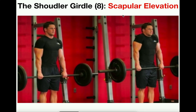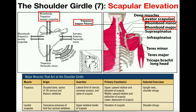Scapular elevation is one of those scapular movements that can be done independently of a shoulder joint movement — you don't actually have to move the humerus to move the scapula upwards. In a barbell shrug, from the resting position to when he shrugs his shoulders upward, his humerus is not moving. The only thing happening is the scapula being pulled upward, accomplished through the upper trapezius fibers and the levator scapulae, with very minor contributions from the rhomboids major and minor.